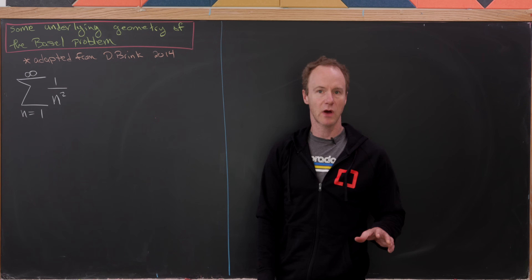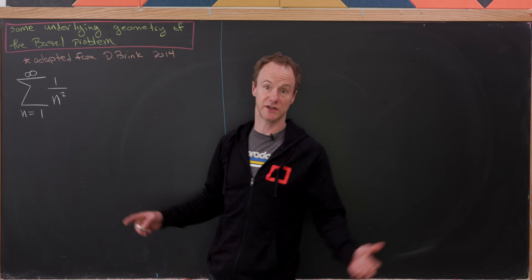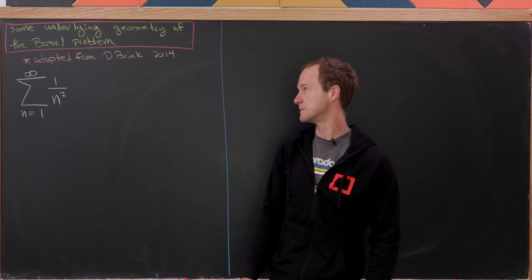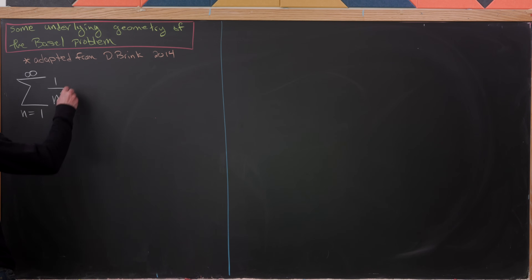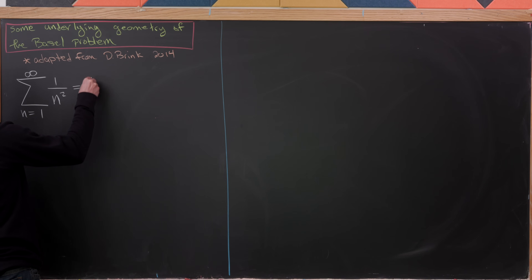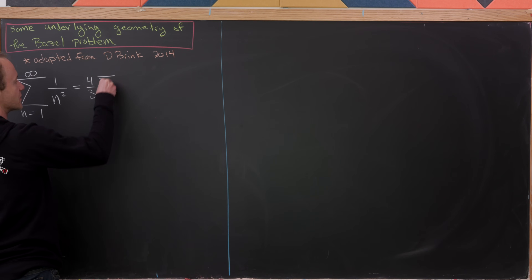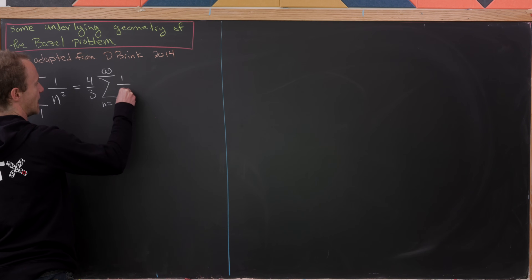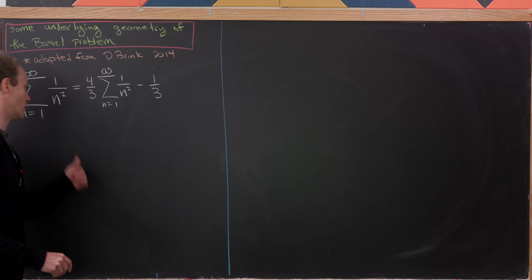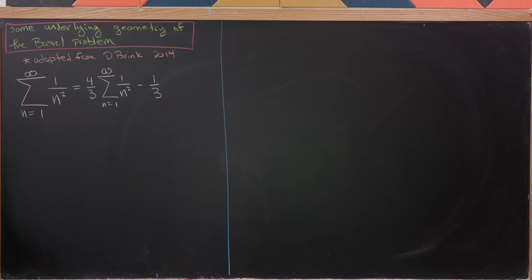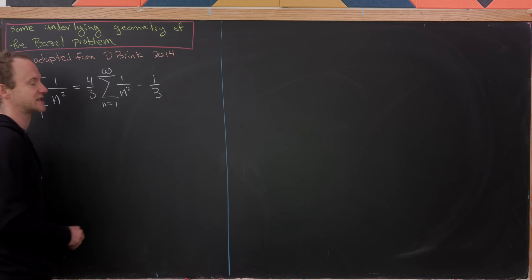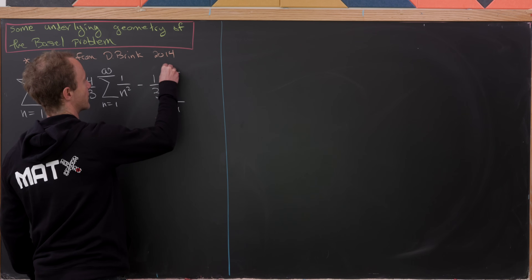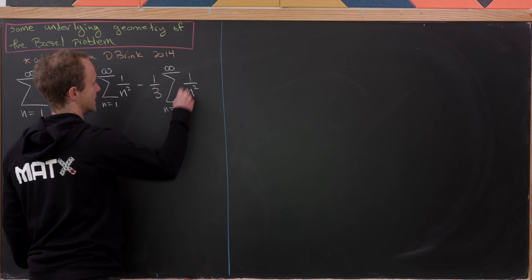We're going to start simply with the sum of the reciprocal of the squares and split it into pieces. I'll write this as four-thirds times the sum of the reciprocal of the squares, and then subtract one-third, since four-thirds minus one-third equals one.